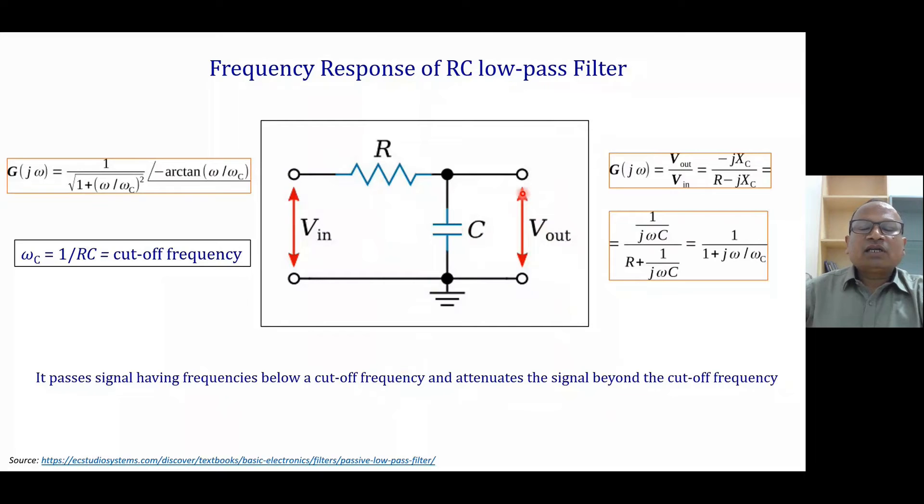How can it be easily proved? If we calculate the transfer function by simple logic, Z2 divided by Z2 plus Z1 by concept of voltage divider, we will get minus Xc. Xc is 1 divided by j omega C, the impedance of capacitance C. So we will get 1 divided by 1 plus j omega divided by omega C.